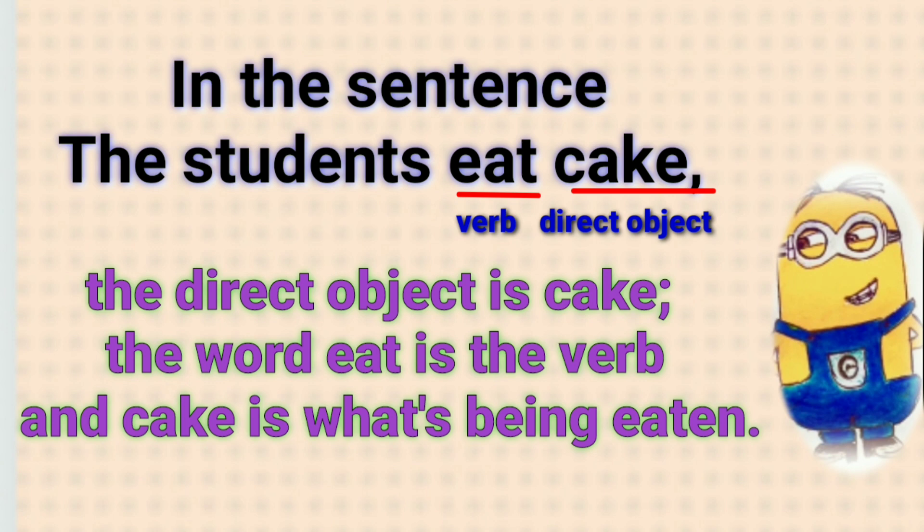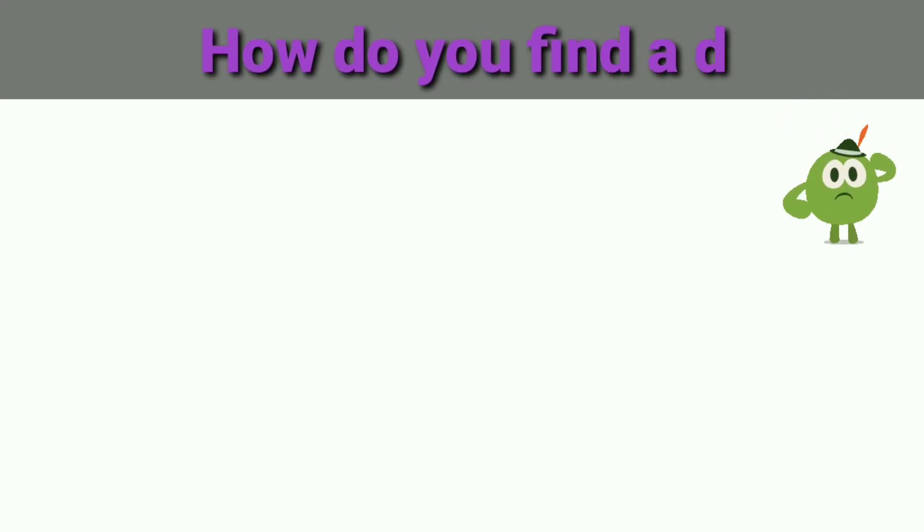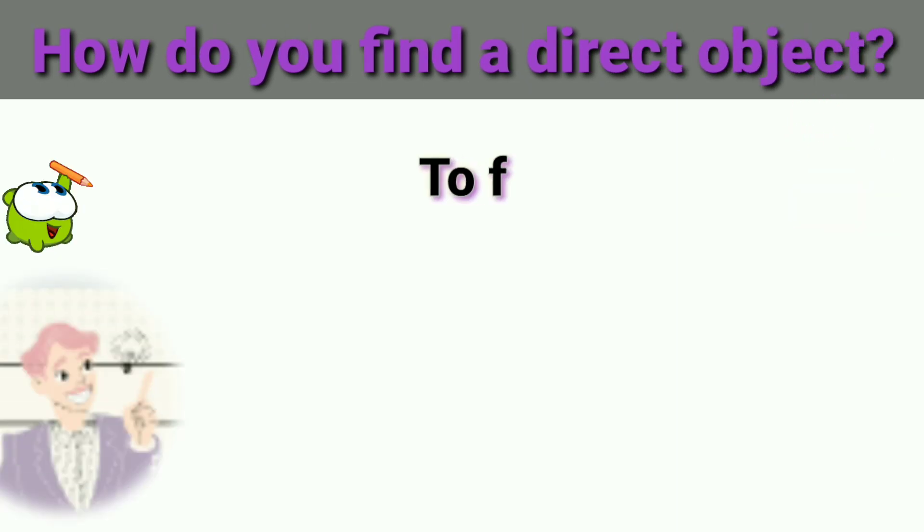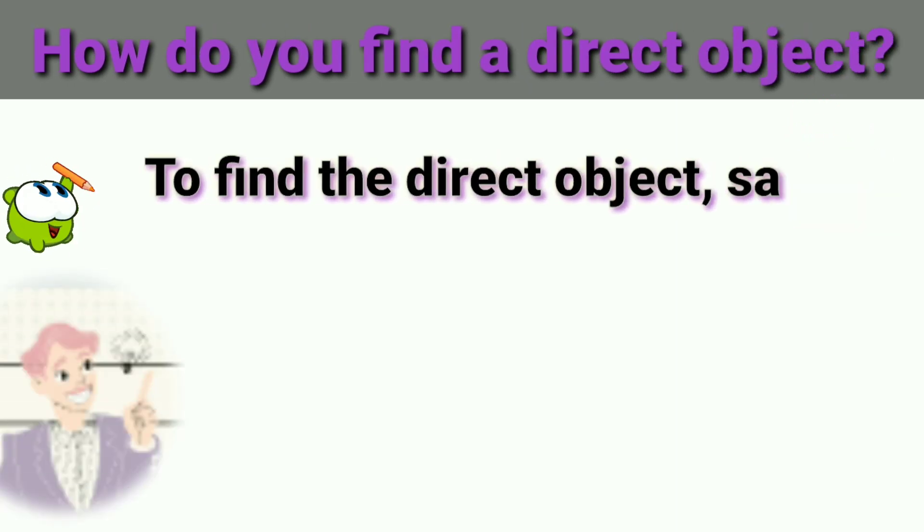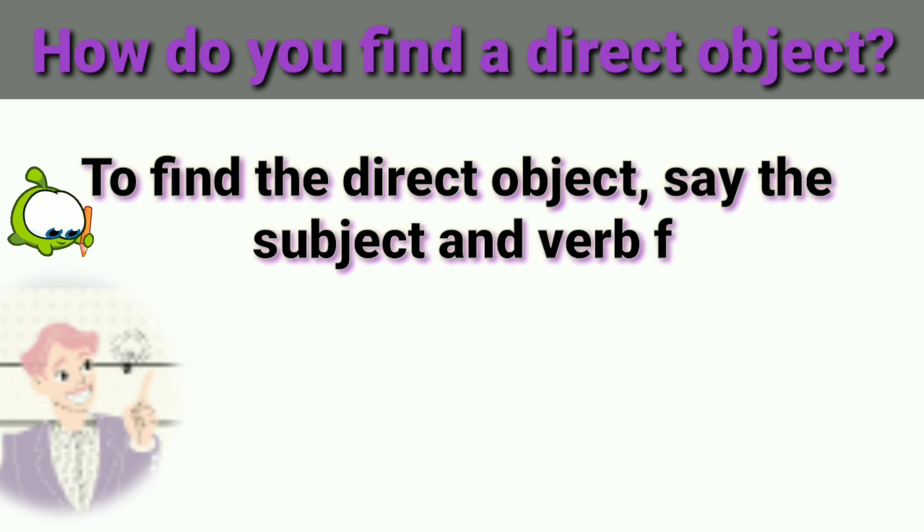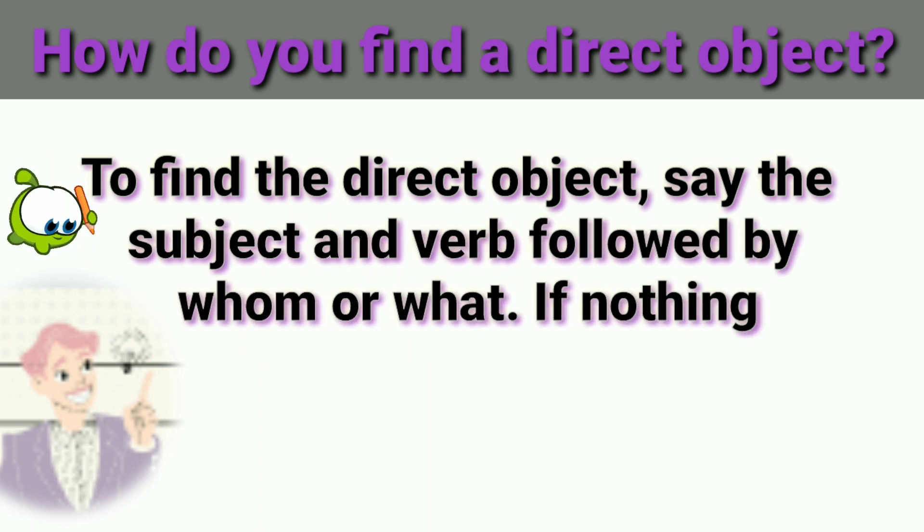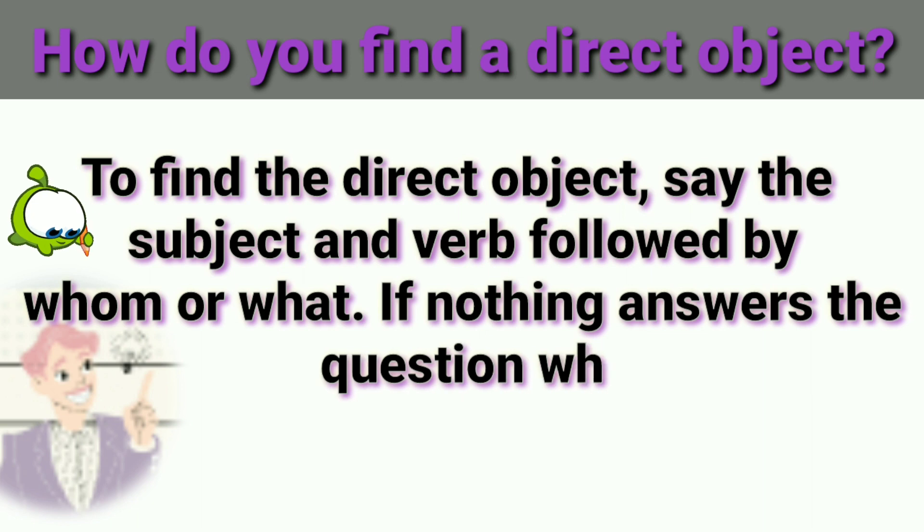How do you find a direct object? To find the direct object, say the subject and verb followed by whom or what. If nothing answers the question whom or what, you know that there is no direct object.